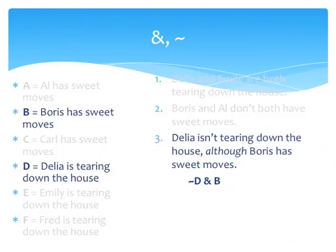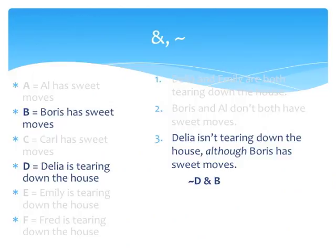Now to the third sentence: 'Delia isn't tearing down the house, although Boris has sweet moves.' The main connective here is ALTHOUGH, which in propositional logic is simply a conjunction — that is, the sentences it forms are true if and only if both components are true. For sentence 3 to be true, it must be the case both that Delia isn't tearing down the house and that Boris has sweet moves. So the main connective is the ampersand. The left conjunct is 'Delia isn't tearing down the house,' which is the negation of D. The right conjunct is 'Boris has sweet moves,' which is B by itself. So our translation for 3 is tilde-D ampersand B.